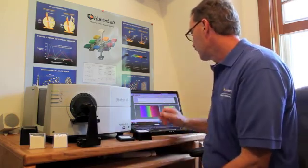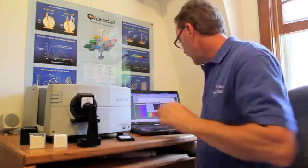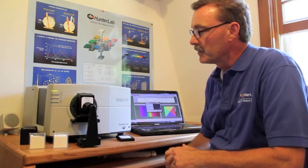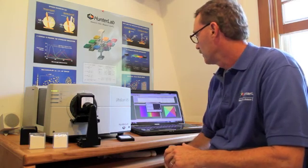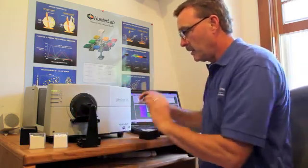And proceed, measuring the light trap, which sets the bottom of the scale. We'll proceed to read the white tile.